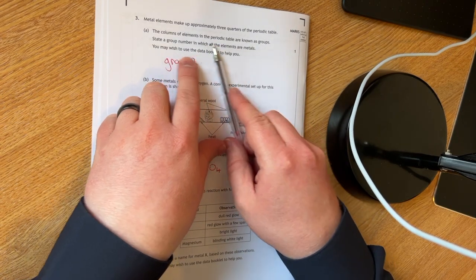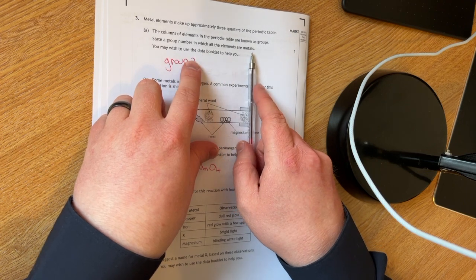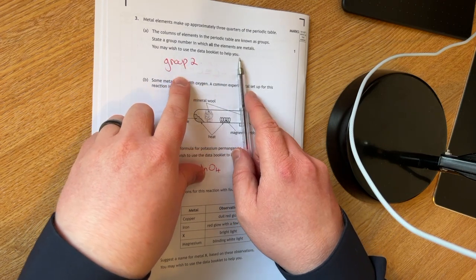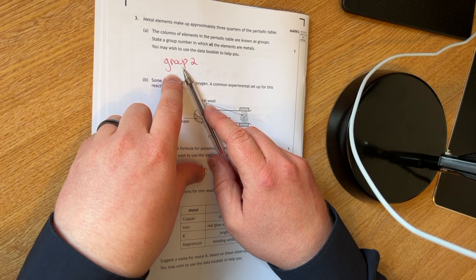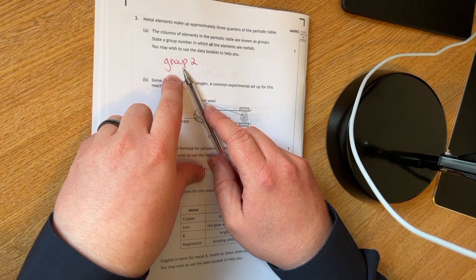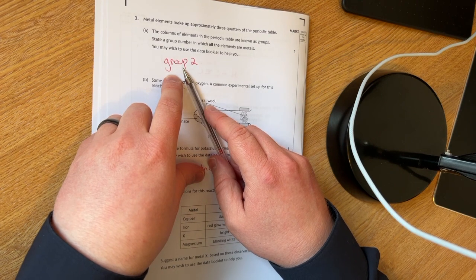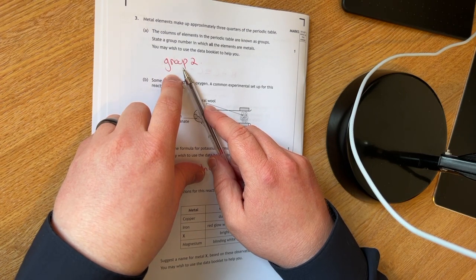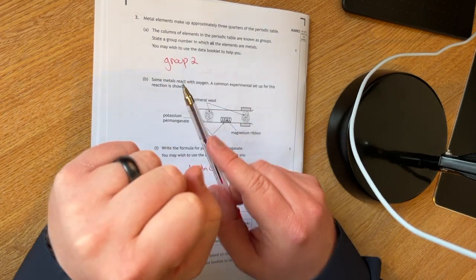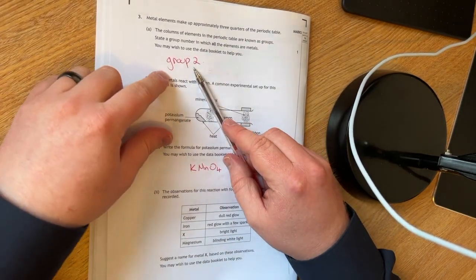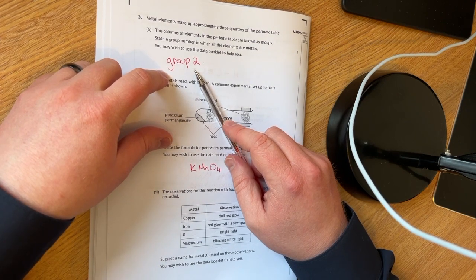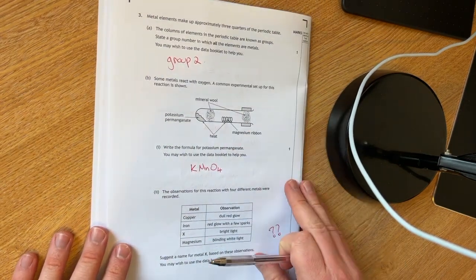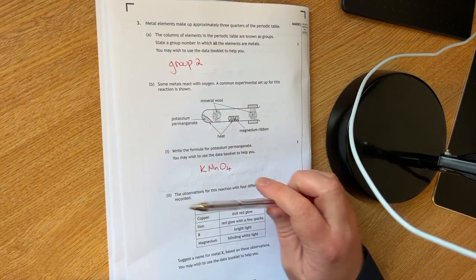The columns in the periodic table are known as groups. State a group number in which all the elements are metals. This one was interesting to me and I think they were trying to catch you out. Because a lot of people might say group one. However, hydrogen is in group one and that's a non-metal. Group two are all metals. And I suspect that that is what they want you to say.